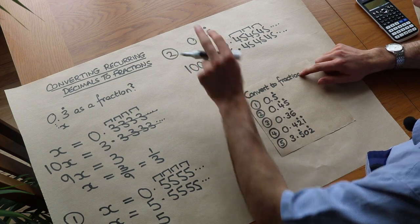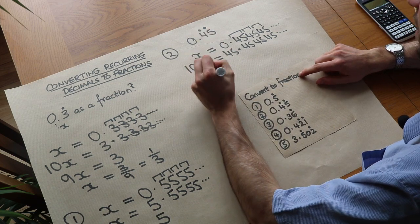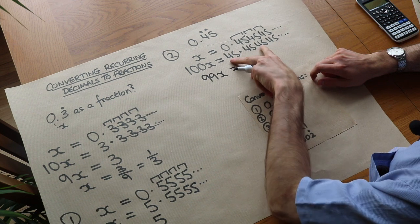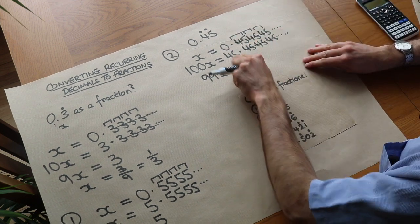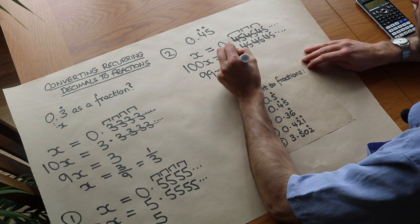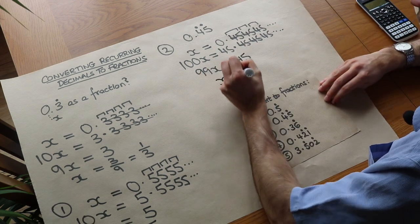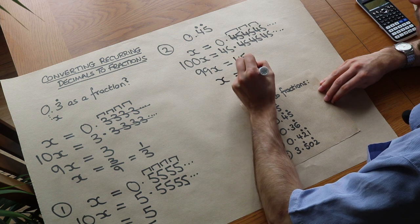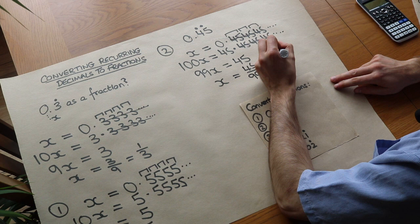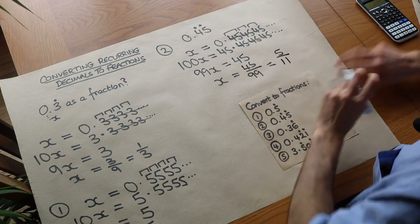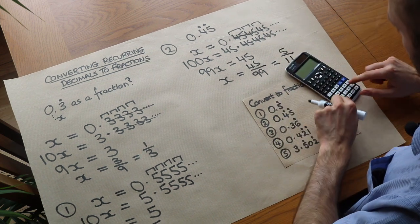So then we subtract as before. 100x minus x is 99x. Now we do this minus this. All these digits are the same so they get wiped out. We're just left with 45 minus 0 which is 45. Divide both sides by 99. We get 45 over 99. We could divide both top and bottom by 9. So we get 5 over 11. And let's just check. 5 divided by 11.